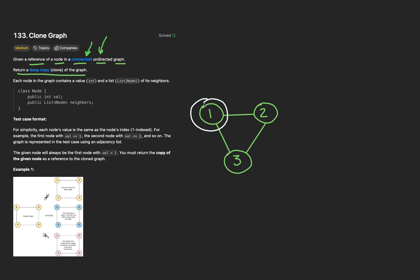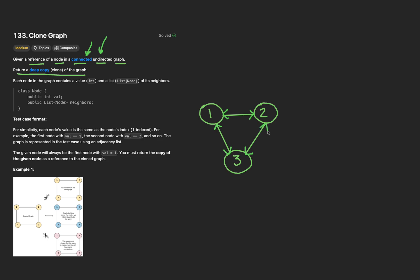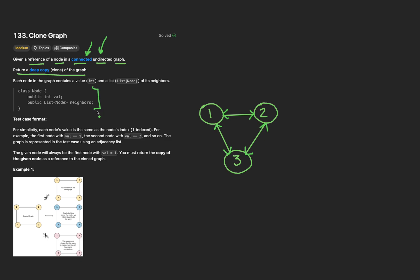Put another way, a connected graph is not a disconnected graph, such as this one. The second concept is an undirected graph, whereby each node has a two-way edge to all of its neighbors. Take node 2 — it has an edge to node 3, and inversely, node 3 has an edge right back to node 2. You can verify this relationship by checking the schema of a node, which has a list of all of its neighbors.